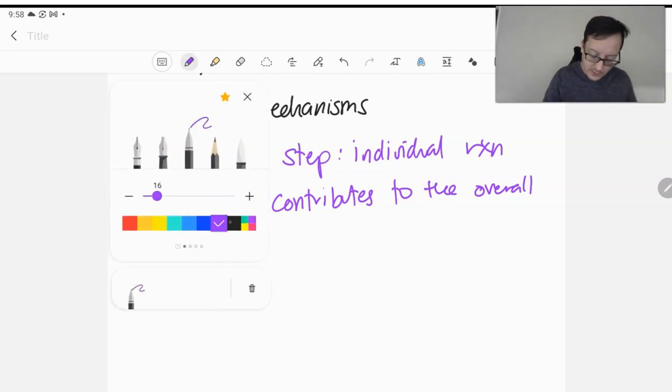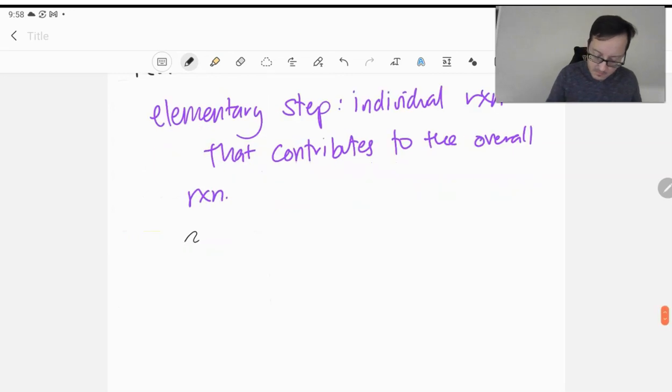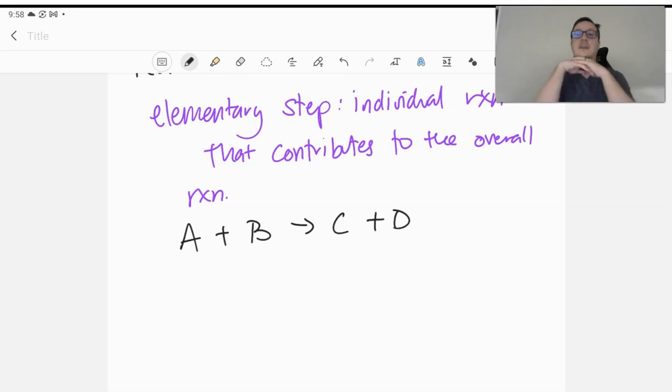When we talk about an individual step, say we're talking about a generic reaction, we might say that this is our overall reaction. We have A plus B goes to C plus D.